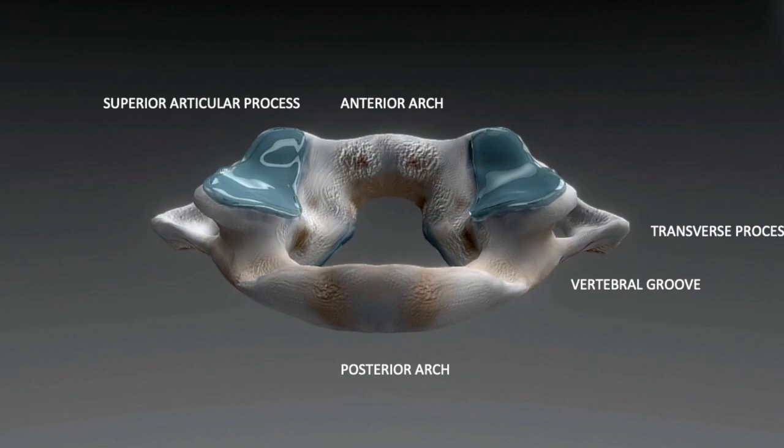Immediately posterior and lateral to the anterior arch are two lateral masses. The part colored in blue is the superior articular facet.